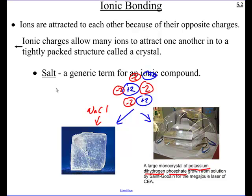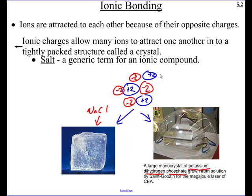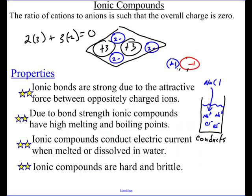And the reason it does that is because all those positive and negatives, if I bump this row just a little bit down, well, now this blue is next to that blue and that red is next to that red. And now you've got, instead of opposite charges next to each other, you've got the same charge. And so it kind of helps it blow apart. So those are the properties of ionic compounds.